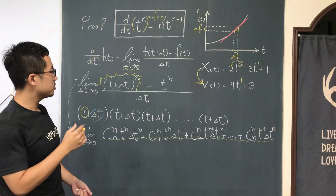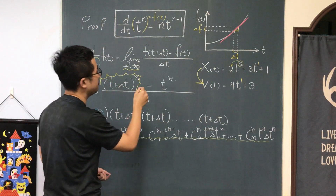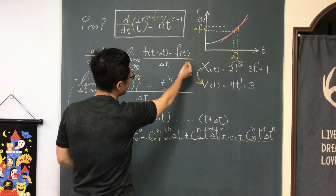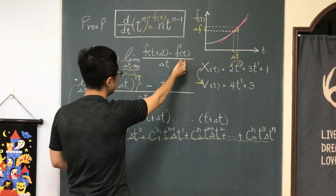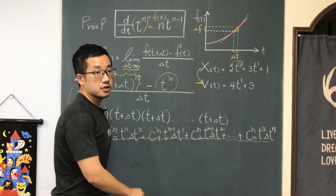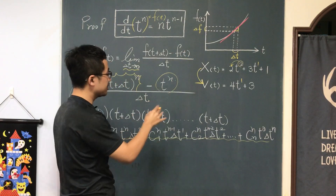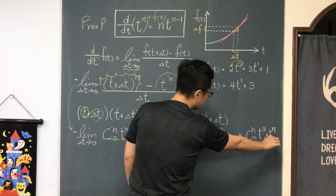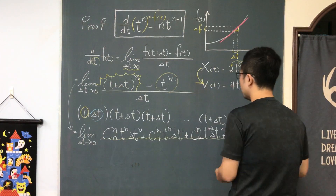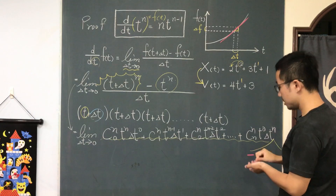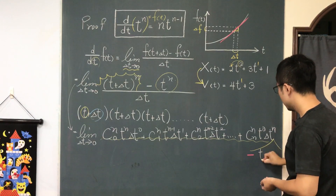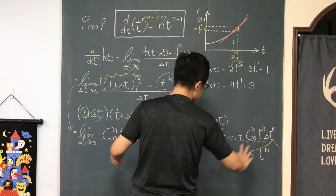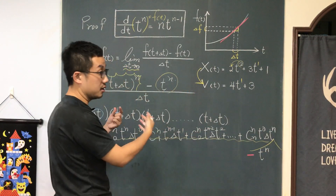Please remember, I'm trying to find the variation of the function. I need f(t + Δt) minus f(t). Since f(t) = tⁿ, don't forget to subtract tⁿ from the expansion. So I put a minus tⁿ in the numerator. All these terms go in the numerator, and don't forget the denominator Δt.